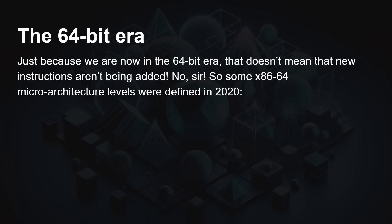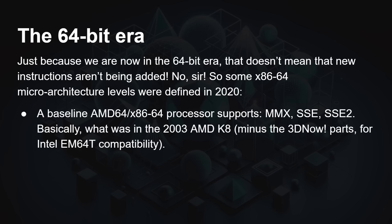Now we're in the 64-bit era, but it doesn't mean that things have stopped — things keep on progressing. We now have this definition of an x86-64 processor. The baseline is an AMD64 x86-64 processor with MMX, SSE, and SSE2, which is basically what was in the 2003 AMD K8 processors — the first 64-bit x86 processors — minus the 3D Now parts, so that you've basically got the same compatibility with the first EM64T, which is Intel's 64-bit processors. AMD's processors came out in 64-bit first, and they are the ones that define the x86-64-bit architecture.